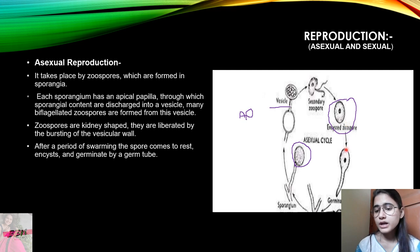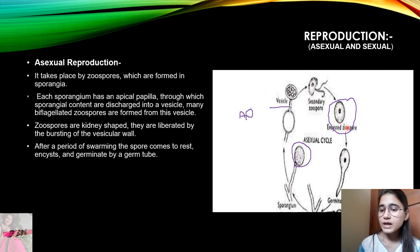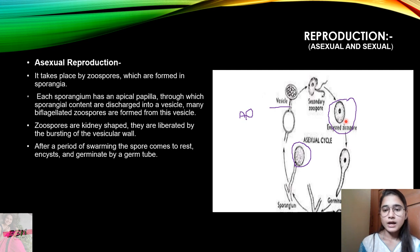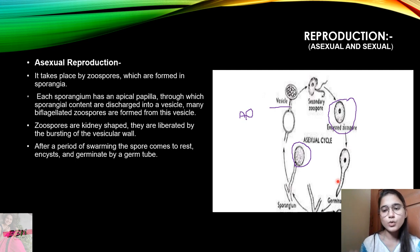When favorable conditions come, the encysted zoospore will germinate — a germ tube is developed leading to new hyphae and new mycelium. If it doesn't get favorable conditions, the zoospore remains in a resting period. To summarize the asexual reproductive cycle: mycelium forms hyphae → sporangium develops → zoospores are produced → zoospores germinate → new hyphae and new mycelium develop.